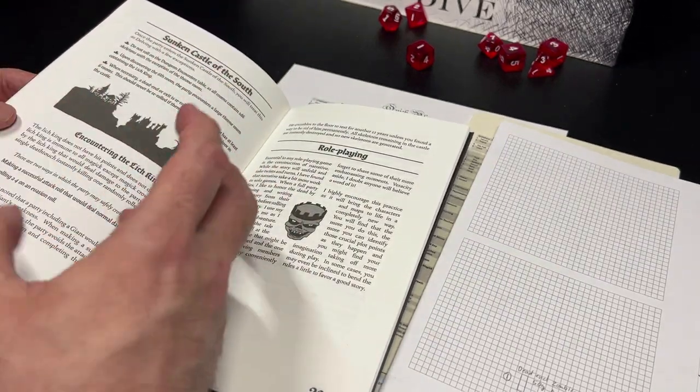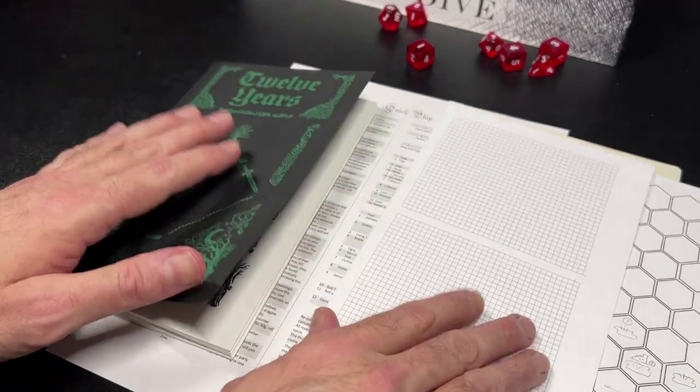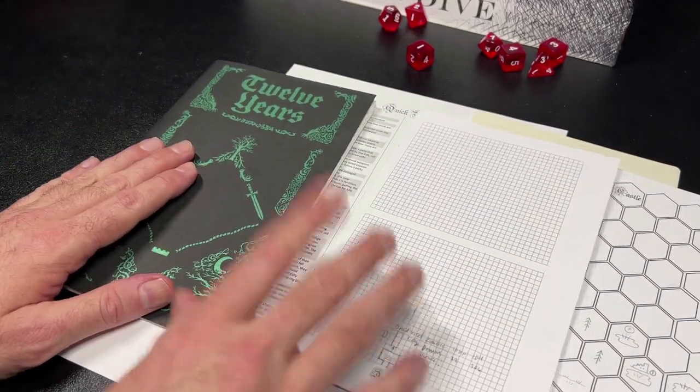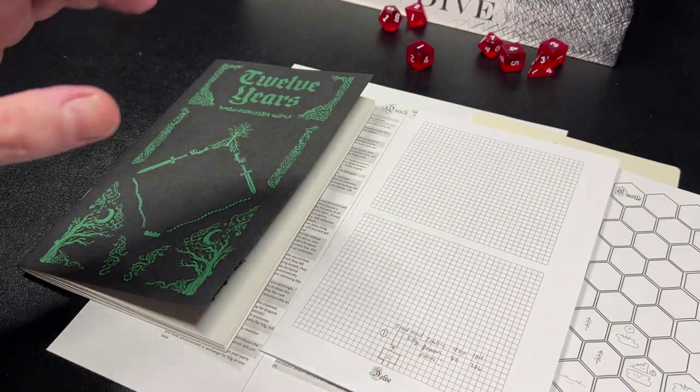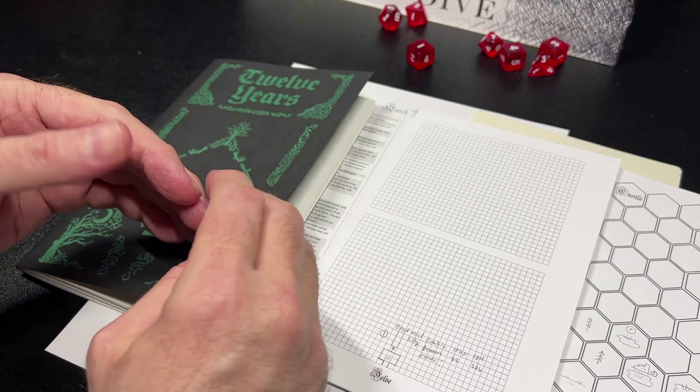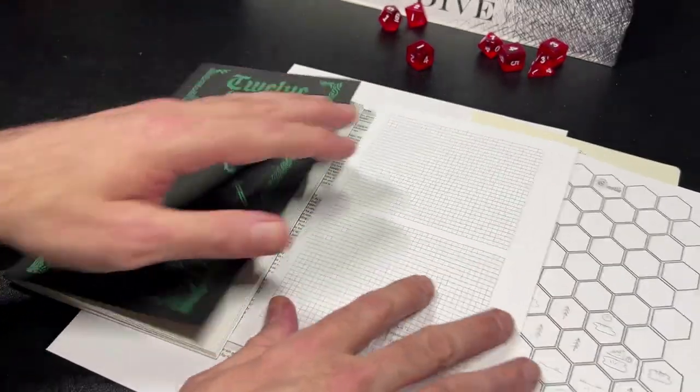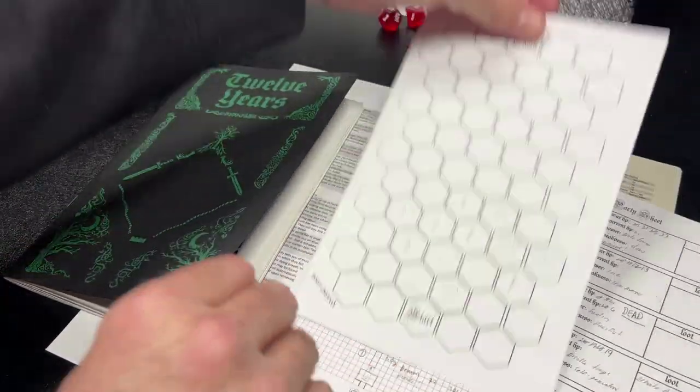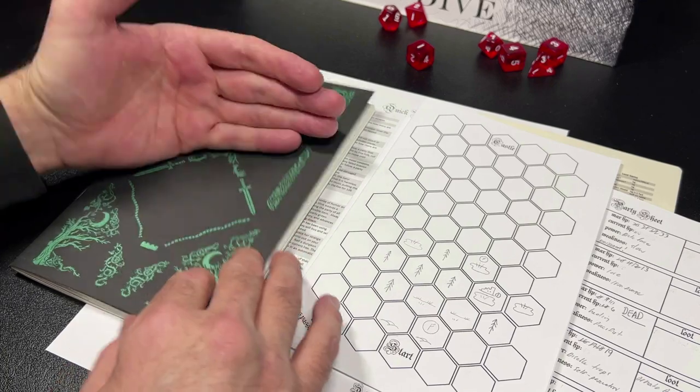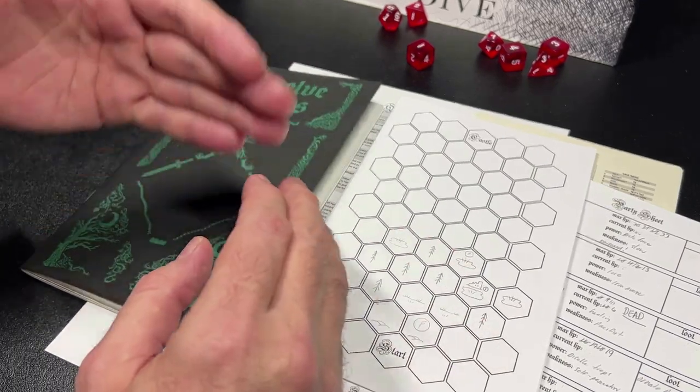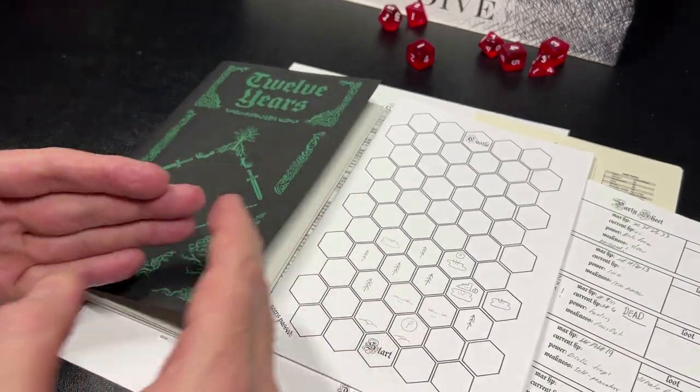So here are five things about 12 Years. One: it offers a condensed hex crawl and dungeon crawl experience within a small space with minimal effort. And that is something that I do greatly enjoy. This game is very simple to get going. It's simple to learn, simple to play, it takes up a small amount of space, and you get quite a bit of game out of this small amount of components.